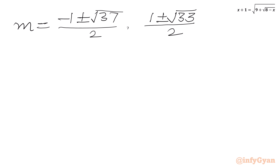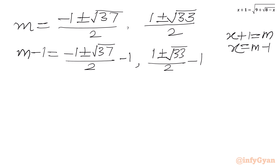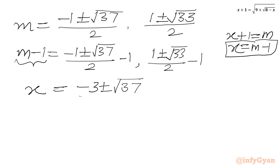Since the substitution was x plus 1 equals m, we have x equals m minus 1. So x equals (−1 ± √37)/2 minus 1, giving x equals (−3 ± √37)/2. And x equals (1 ± √33)/2 minus 1, giving x equals (−1 ± √33)/2. We now have four solutions overall.